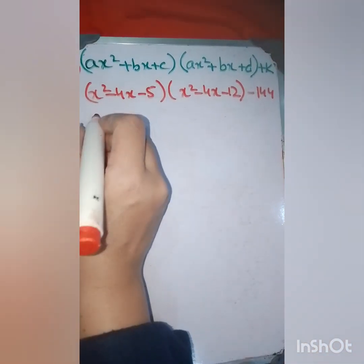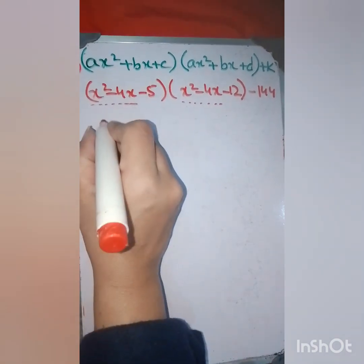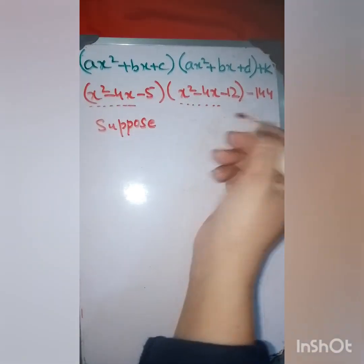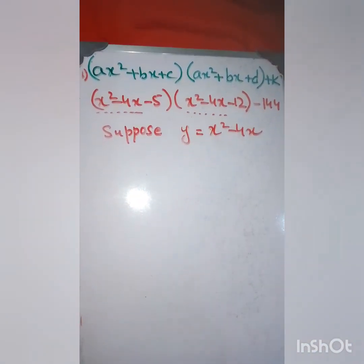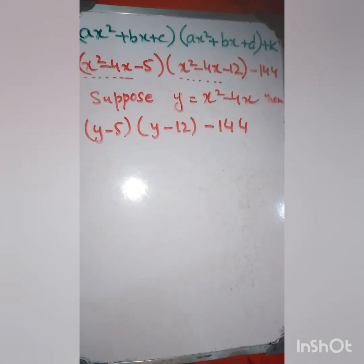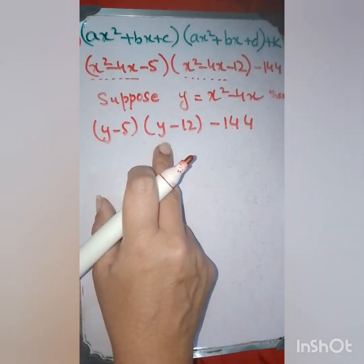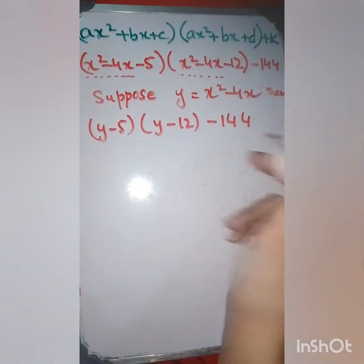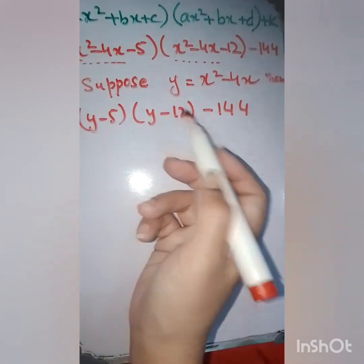First of all, we observe that the first two terms in the two brackets are the same. So we are going to let y equal to x² minus 4x. Where x² minus 4x was written, I have put y in its place. So we now have y minus 5 and y minus 12, and 144 is the remaining term — the simplest expression I have gotten by this substitution.